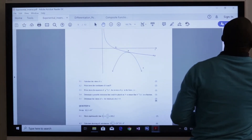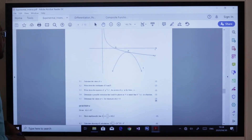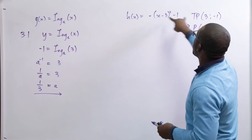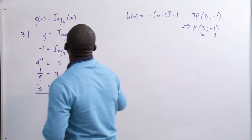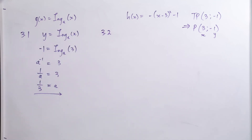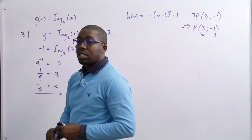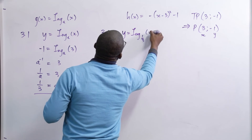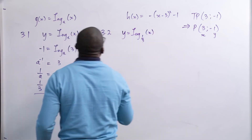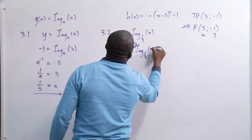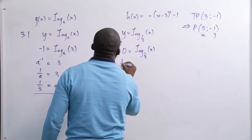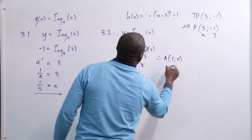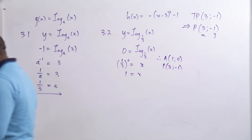Question 3.1: A equals 1 third. Question 3.2: coordinates of P. From the turning point format of the parabola, P is 3 and minus 1. For the coordinates of A — A is the X intercept of G, so Y equals 0. Setting 0 equals log to the base of 1 third of X, and converting: 1 third to the power 0 equals X, so X equals 1. Therefore A is 1 and 0, and P is 3 and minus 1.